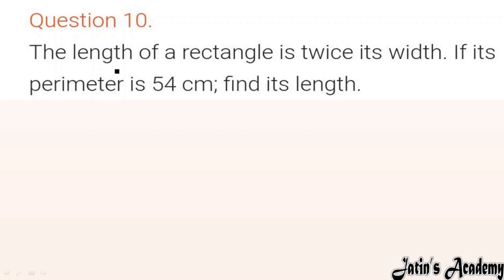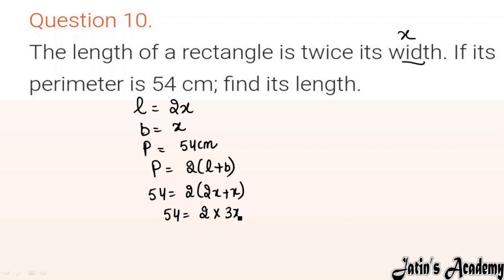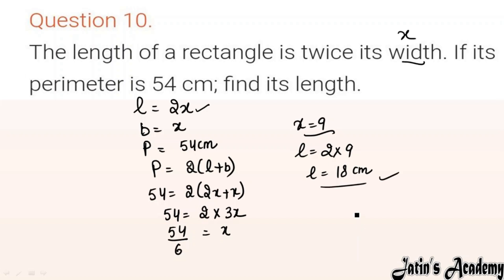Question 10: The length of a rectangle is twice its width. Let the width be x cm, so the length is 2x cm. The perimeter is 54 cm. Using the formula: perimeter equals 2(L plus B), so 54 equals 2(2x plus x) equals 2 times 3x equals 6x. Dividing: x equals 54/6 equals 9. So the length is 2 times 9 equals 18 cm.